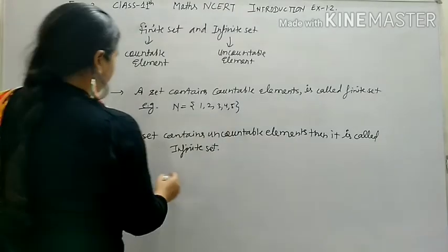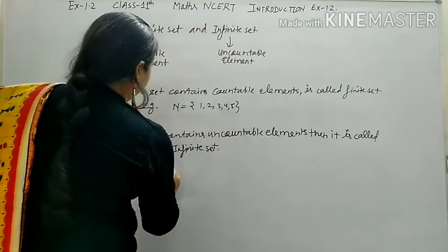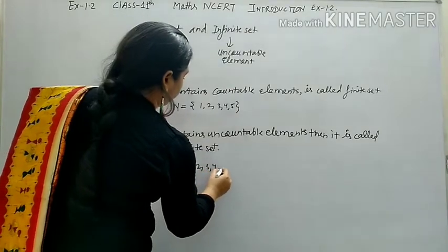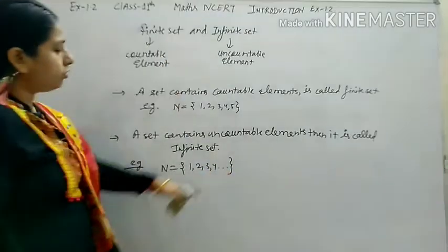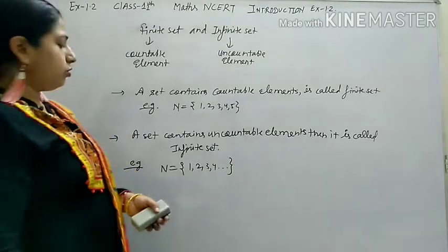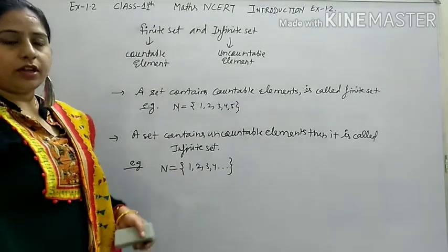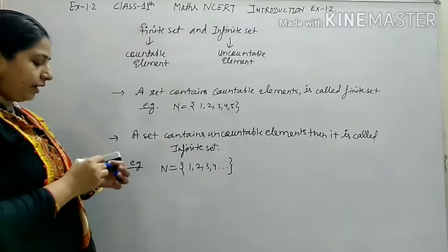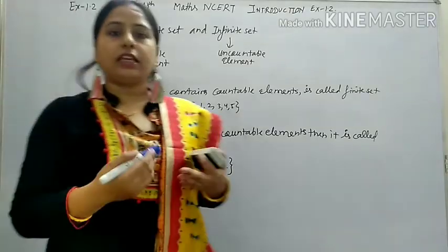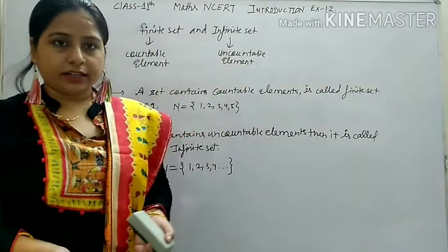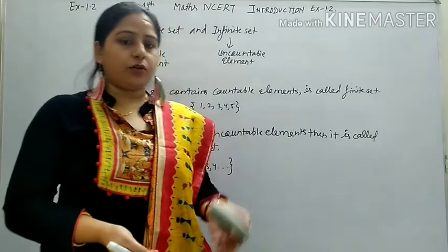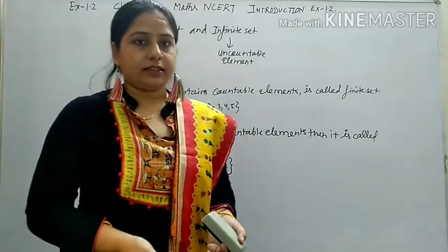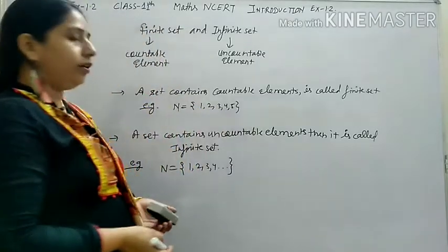For example, the set of natural numbers {1, 2, 3, 4, ...} with three dots representing infinity — we don't know how many elements are there, so it is an infinite set. When we know the total number of elements, it is a finite set. Pause the video to note this down.